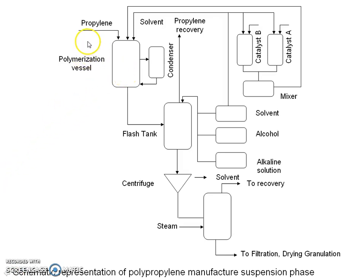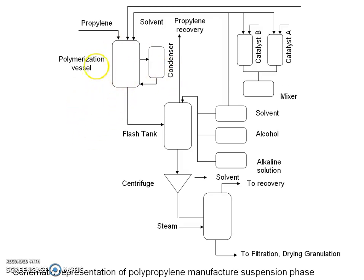Polypropylene monomer is fed into the polymerization vessel along with catalyst and solvent. A temperature of 50 to 80 degrees and pressure between 2 and 4 atmospheres is maintained in the polymerization vessel. Polypropylene polymer is formed continuously, and the slurry becomes very thick with up to 40% solid.